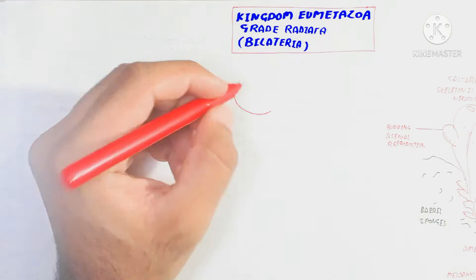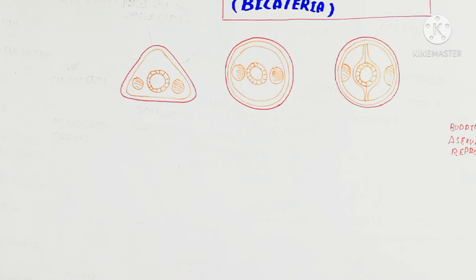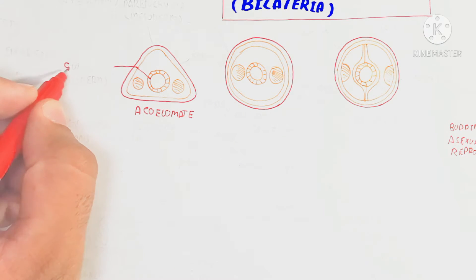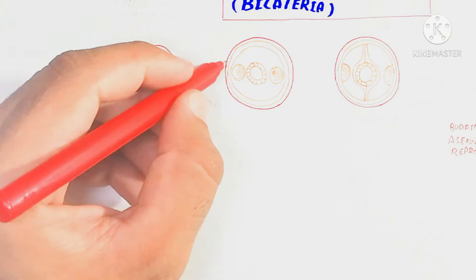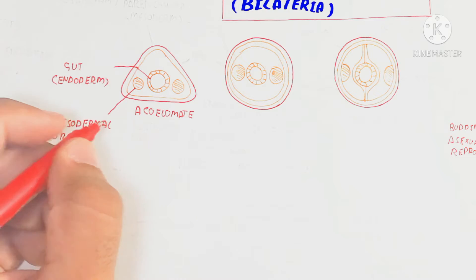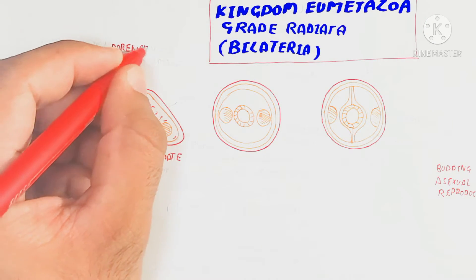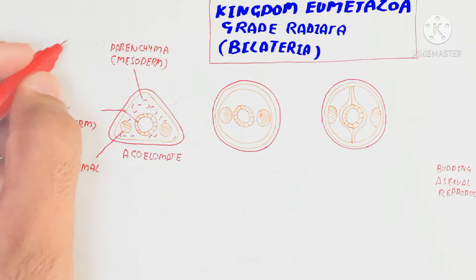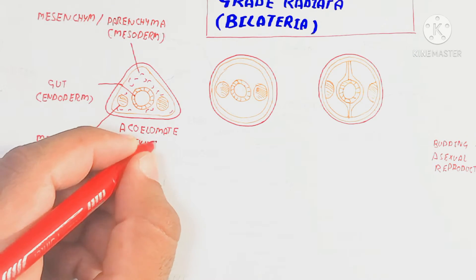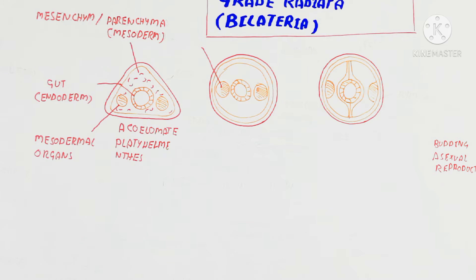Within the triploblast animals we discuss deuterostomes and protostomes, as well as acoelomate, pseudocoelomate, and coelomate classifications during the embryonic developmental stages. During gastrulation after cleavage, the acoelomate condition contains no body cavity — no coelom is present. Instead, parenchyma or mesoderm fills the space. An important example of acoelomate is phylum Platyhelminthes, which contains Planaria.